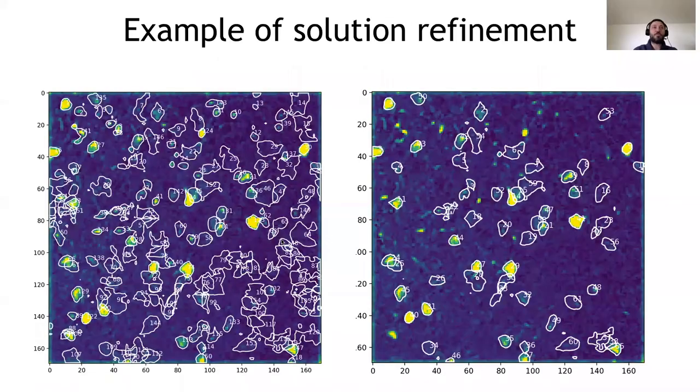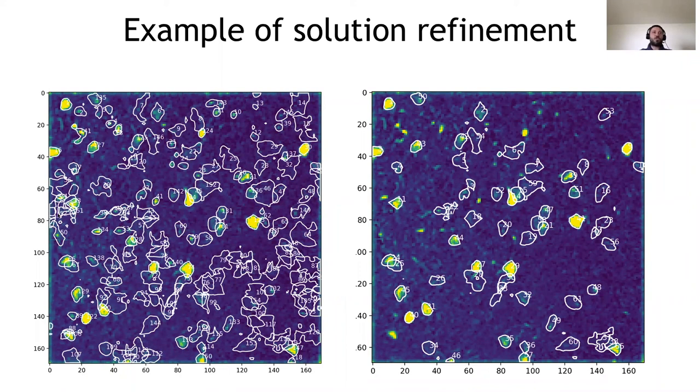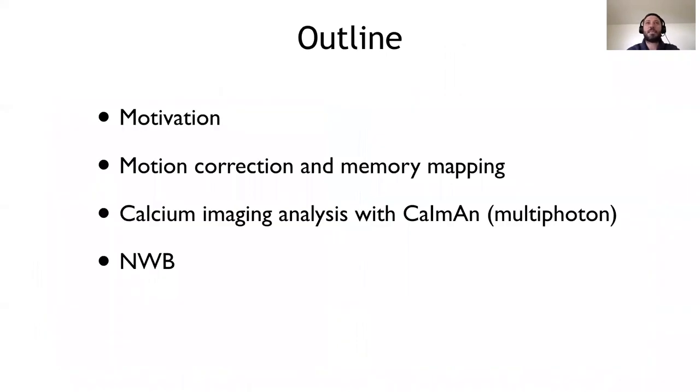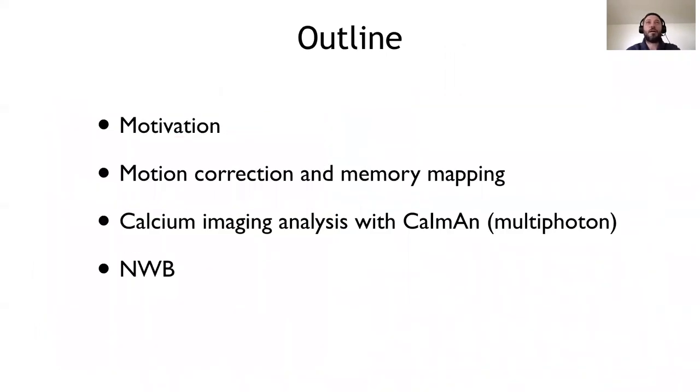So example of solution refinement, we start with our patches, we merge everything together and you see that there is a lot of components that don't look like real neurons. Then we pass our conditions and then you see automatically we are able to pick up most of the good neurons. As you will see later in the demo, it is also possible to further refine with a very basic visual interface. Nothing like what you saw from Biafra on Tuesday. That was masterly.